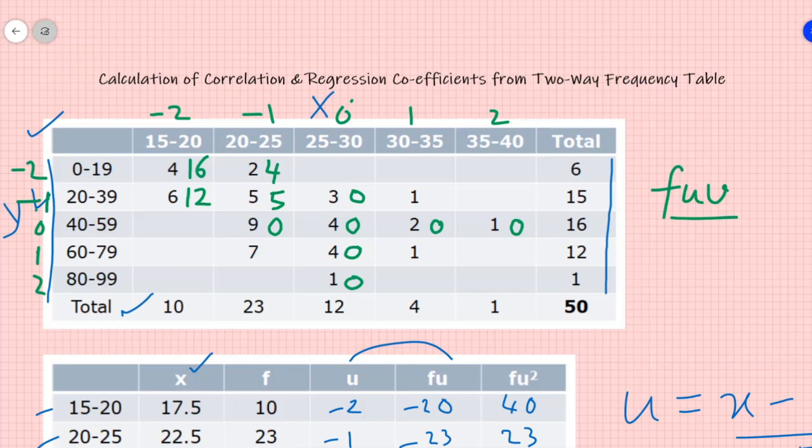Then again, 1 into minus 1 is minus 1, so this will give me minus 7. Minus 1 into 1 is minus 1, this will give me minus 1. 1 into 1 is 1. Now all done. Now we need to add up, let us see, what is the value of summation fuv: 16 plus 12 is 28, 32, 37, minus 7 is 30, minus 1 is 29, plus 1 is 30. So we have got summation fuv equals to 30.